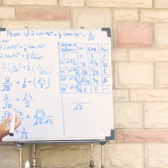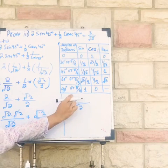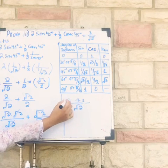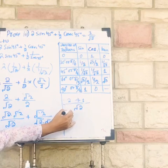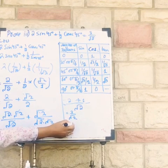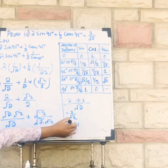Under root of 2 multiply with under root of 2 I get 2 plus 1, 3 divided by under root of 2 which is exactly equal to right hand side.